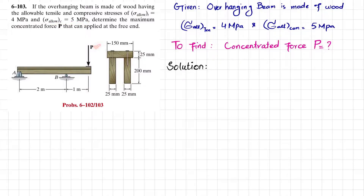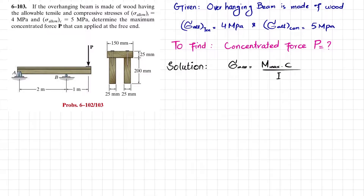You have to find P. Let's start with the solution. As we know, maximum bending stress is equal to maximum bending moment times c divided by I. What we'll do is get the maximum bending moment, then get the value of P by inserting into this formula.